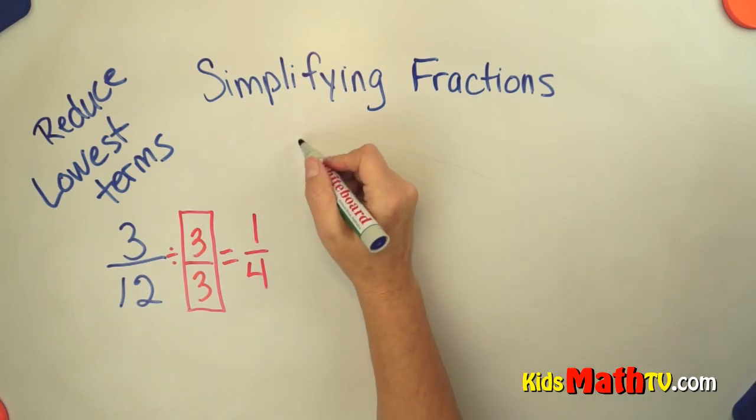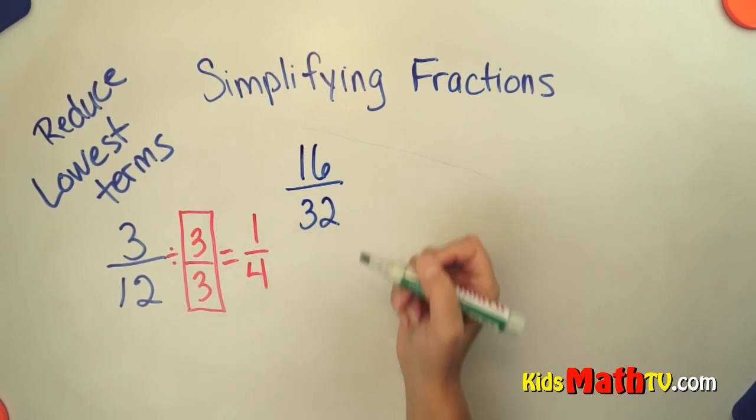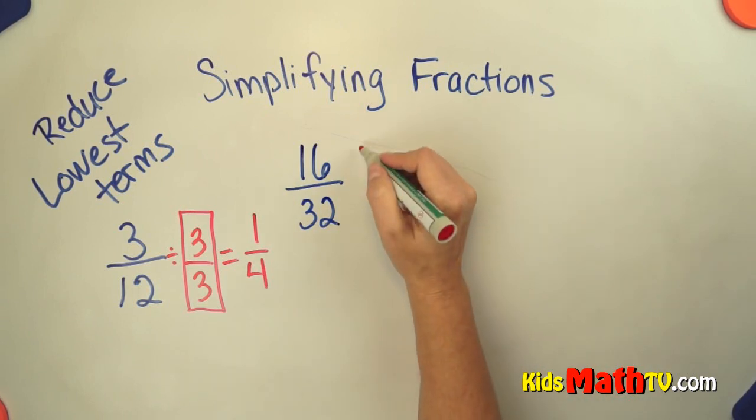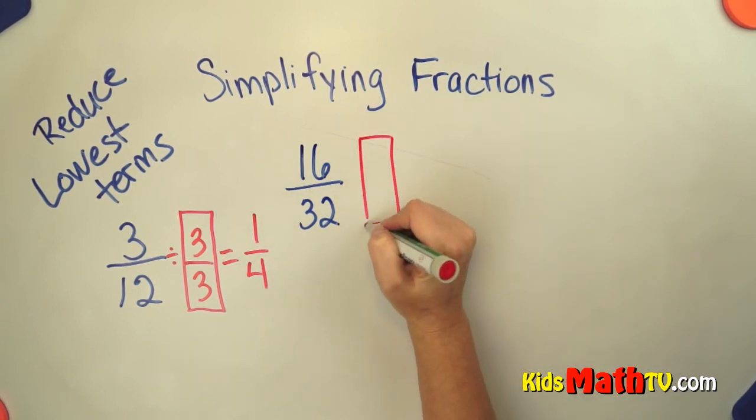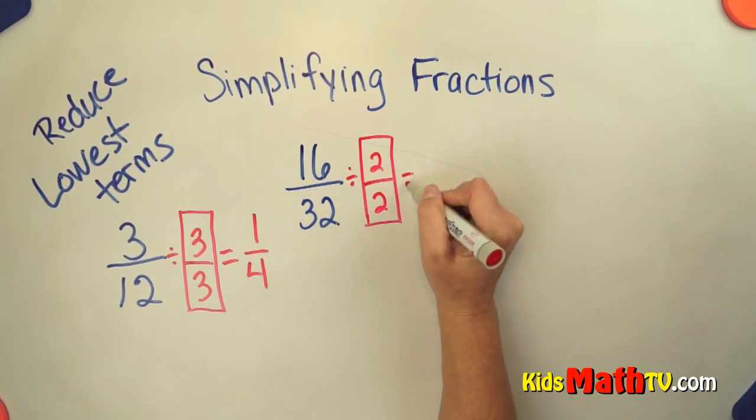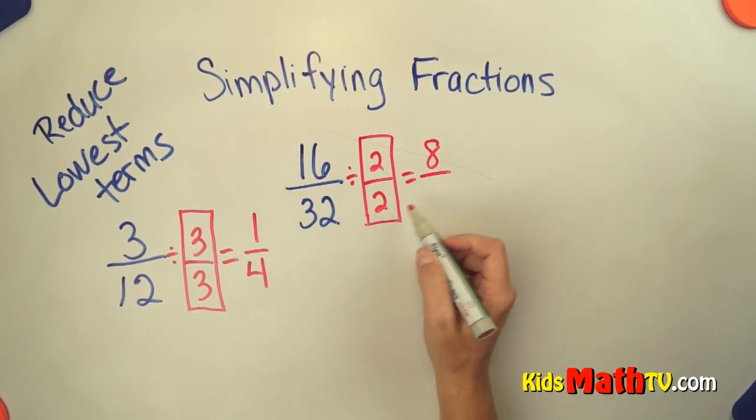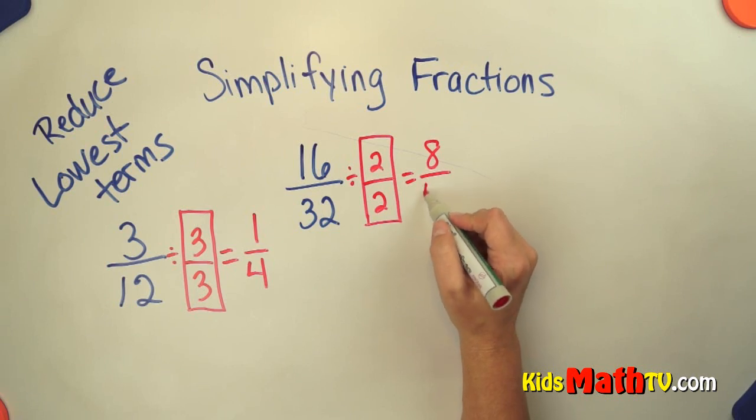Let's try another one. How about 16 over 32. So we think about what number will divide both 16 and 32. Well I know they're both even numbers so I'm going to divide by 2 over 2. 16 divided by 2 is 8. 32 divided by 2 is 16.